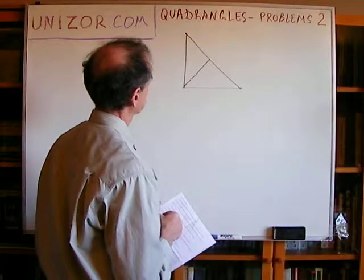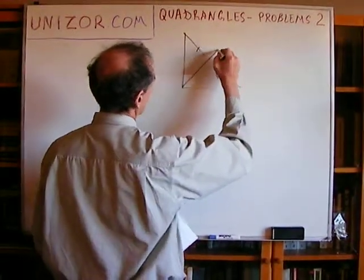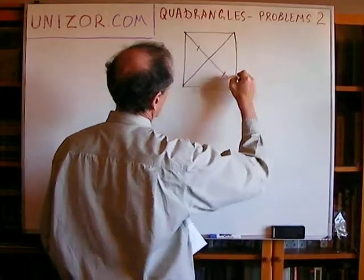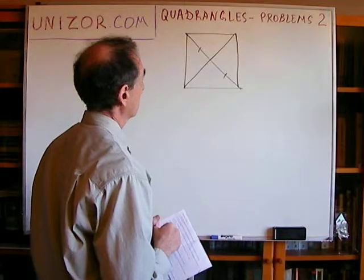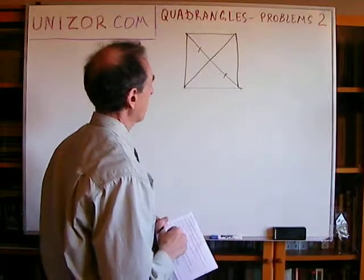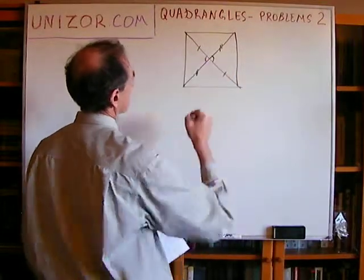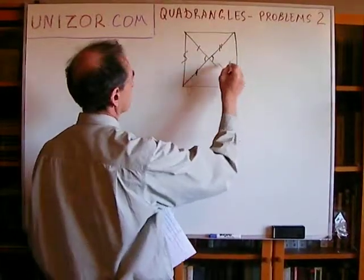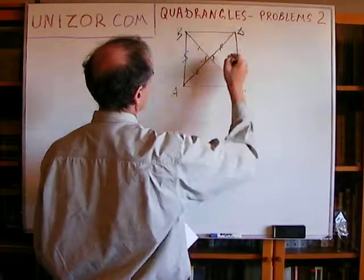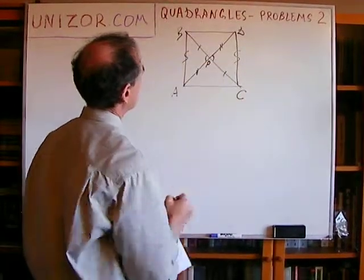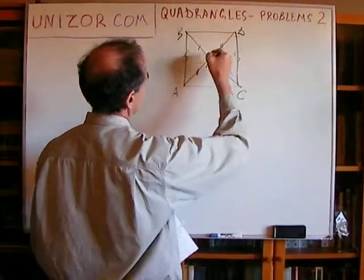Let's think about it this way. Since it's a median, we know this segment is equal to this one. Now, if I extend the median by the same size and build a quadrangle, this quadrangle will obviously be a rectangle. First of all, it's a parallelogram because these two are equal and these two are equal, so these angles are vertical. Triangle ABP is congruent to DPC by side-angle-side — equal sides, equal sides, and the vertical angle in between.